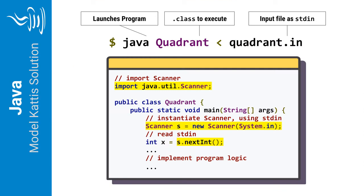If you want to write the solution in Java, then your program is going to follow this model, because your program needs to be able to read from standard input. You will have to import and instantiate a Scanner object, and then call its methods to read the data coming into the program. To test your program, you use the Java executable, providing it the name of the compiled class you wrote, and then directing in the contents of an input file using the left angle bracket, otherwise known as the less than sign.